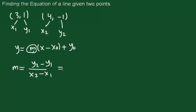And that equals y2 minus y1, which is -1 minus 1, over x2, which is 4, minus x1, which is 3. It's going to give us -2 over 1, which is -2.